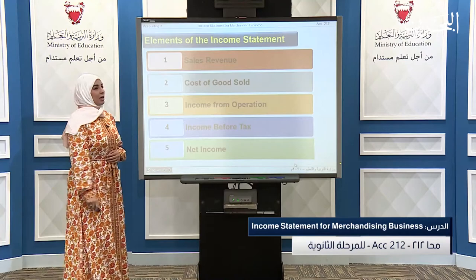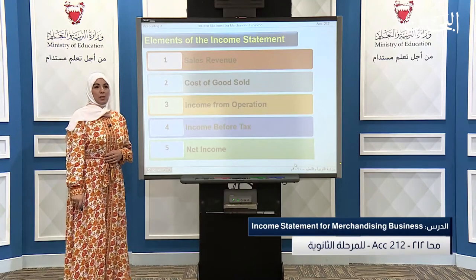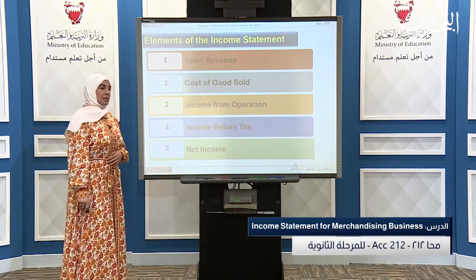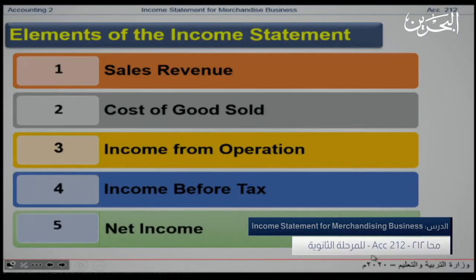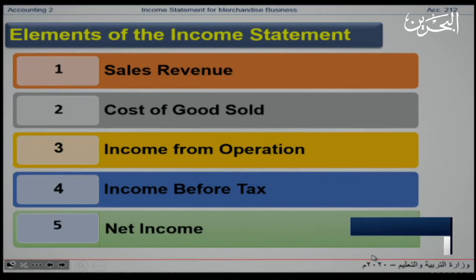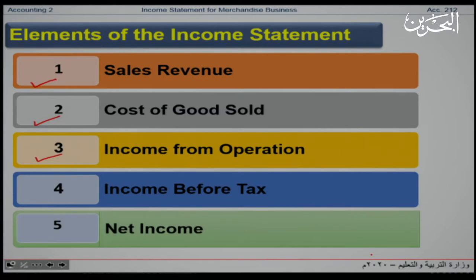Let us take a look at the elements of the income statement. It consists of five elements. The first one is the sales revenue. The second is the cost of goods sold. The third is the income from operation. The fourth, income before tax. And finally, the net income.